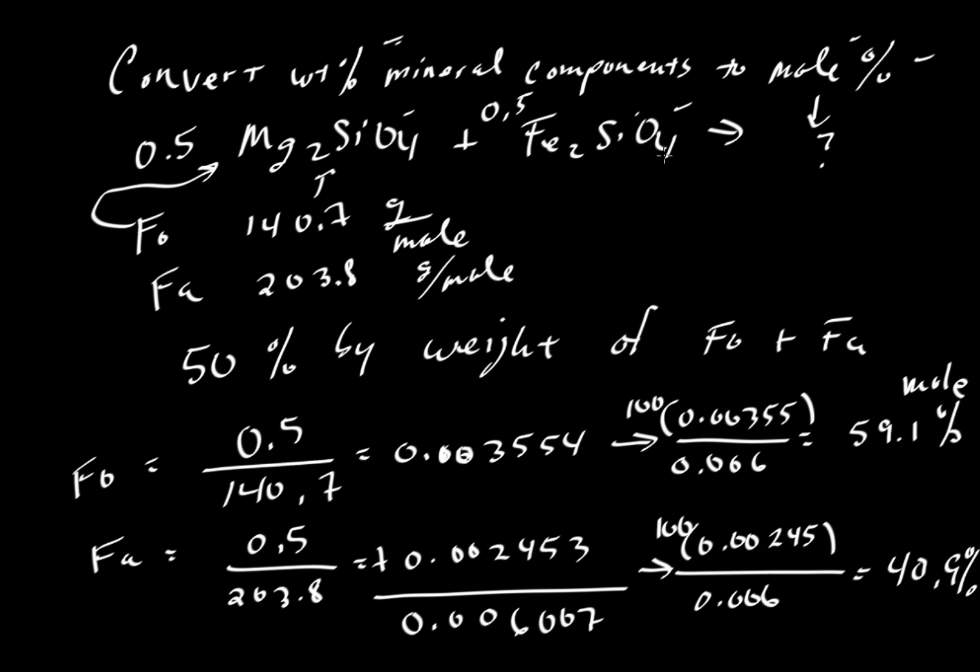And take a look at this. Even though we have 50% by weight of fayalite, or the iron end member, it's only 49% molecularly. And that intuitively should make sense. Iron is heavy, so even if we have a smaller amount of iron, it takes up a greater fraction of the total weight.